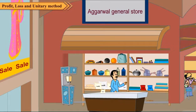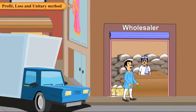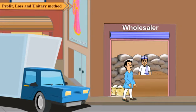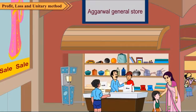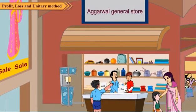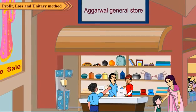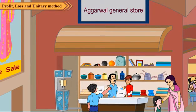Mr. Agarwal is a shopkeeper. He buys and sells things to earn his livelihood. Do you know how a shopkeeper earns money? A shopkeeper buys things from a wholesaler, and then sells these things to a customer, usually at a higher price. Generally, a shopkeeper sells his articles at a higher price than the cost price. In this case, he earns a profit.